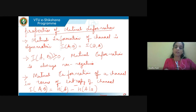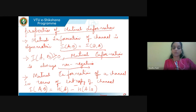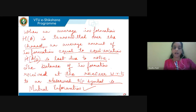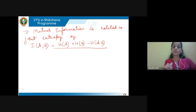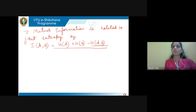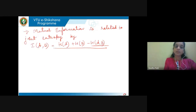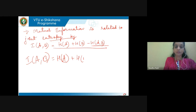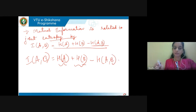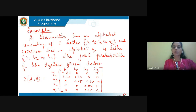Properties of mutual information: it is always symmetric — I(A;B) = I(B;A). It is always non-negative, i.e., always greater than or equal to zero. In terms of joint entropy H(A,B) = Σ p(ai,bj)·log(1/p(ai,bj)), mutual information is written as I(A;B) = H(A) + H(B) − H(A,B), where H(A) and H(B) are individual entropies.